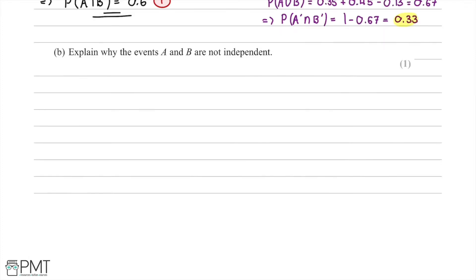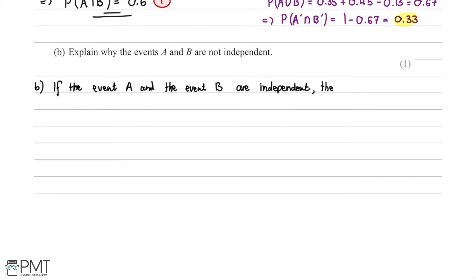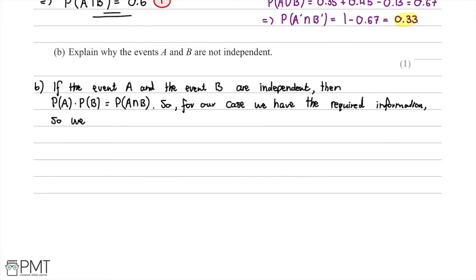In part B we're asked to explain why events A and B are not independent. We know that if A and B are independent, then the probability of A multiplied by the probability of B must equal the probability of A intersect B. We compute this to check.